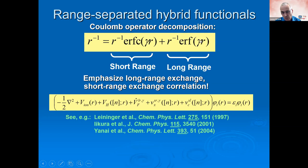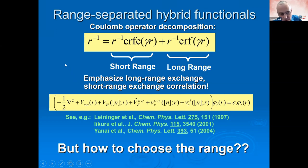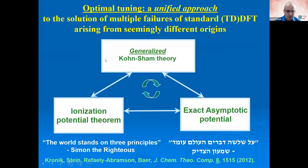The remaining question is how to choose the range-separation parameter gamma — what counts as short versus long range. It can be fit to thermochemistry sets, as done in early papers, but this is still empirical and not sufficient for spectroscopy. This brings us to the third principle: the ionization potential theorem, which tells us how to choose gamma non-empirically.